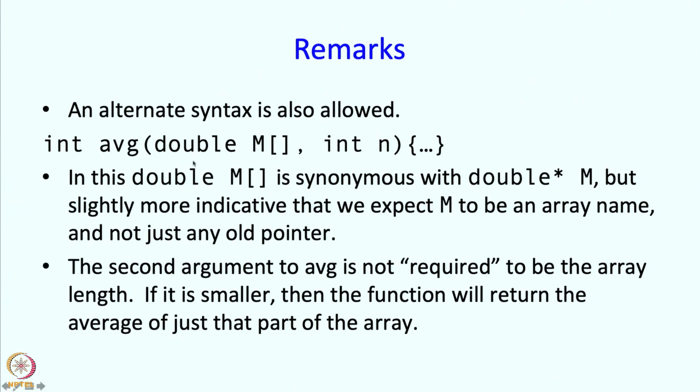Now, the second argument over here is not really linked formally to this element. It is just a second argument. It is just another integer. What you do with that integer inside the function body is your problem. We are choosing, we are deciding when we write this function that the second argument is supposed to be the length of the array. Of course, the average function does not know that. You can in fact pass a smaller value of n and then the average function will just take the average of the initial so many elements rather than all the elements in the array.